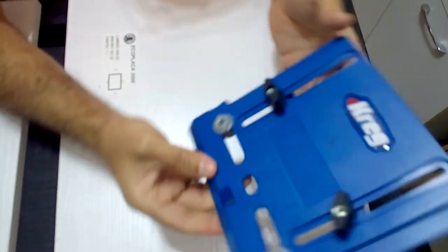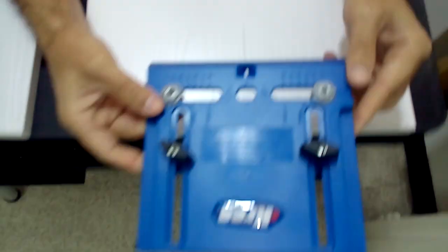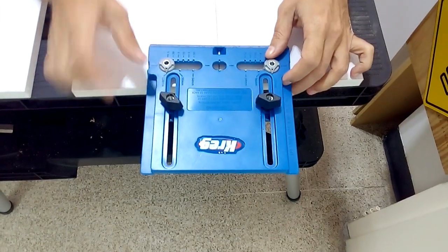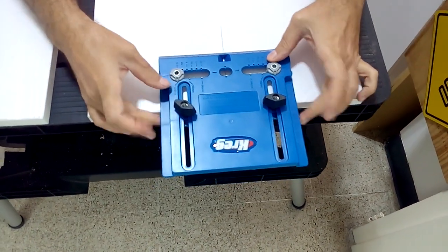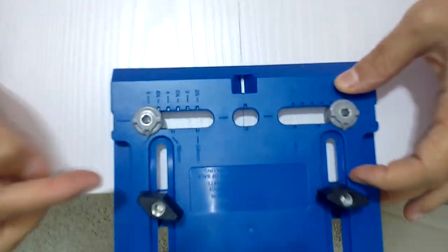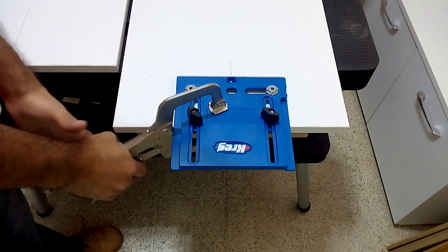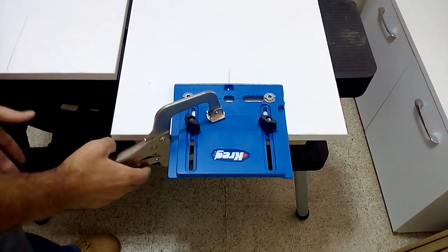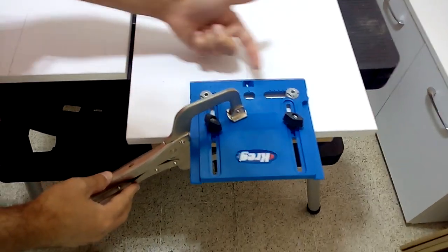It is very important that when placing the template on the door that we are going to drill we have a line drawn to indicate the center of the handle. You can use a clamp to hold the template on the door that you are going to drill.